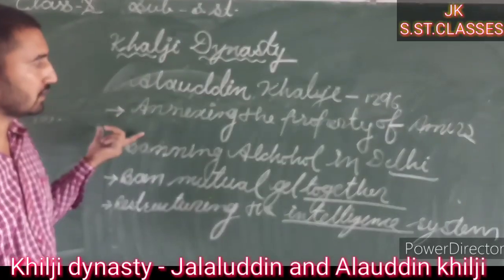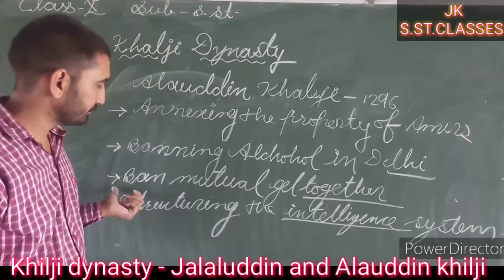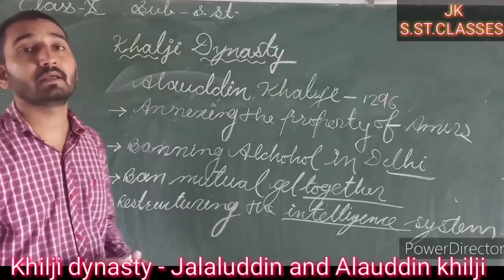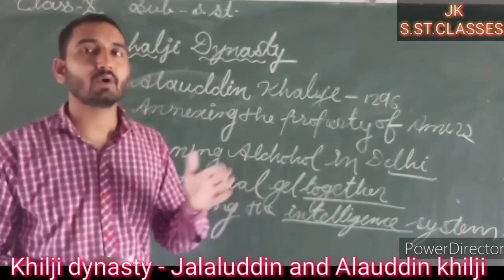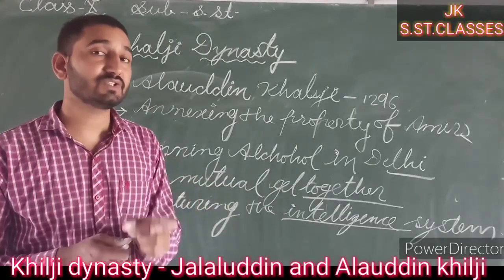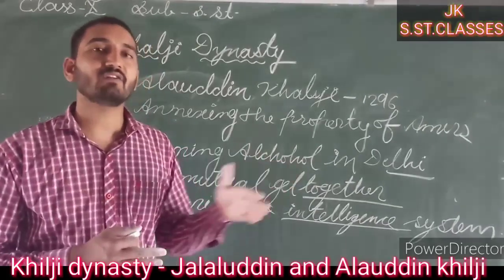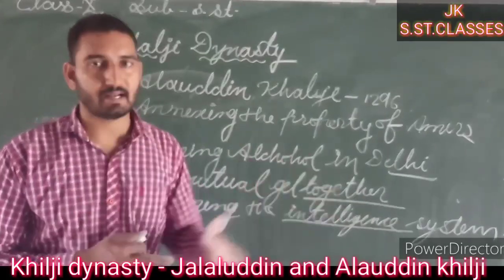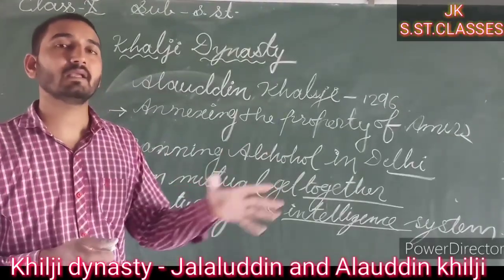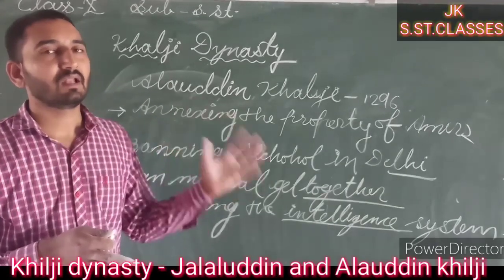To summarize the four rules: annexing the property of Amirs, banning alcohol in Delhi, banning mutual get-togethers of Amirs and landlords, banning marriages without the permission of the Emperor, and restructuring the intelligence or spying department to get complete information about the different activities of landlords.